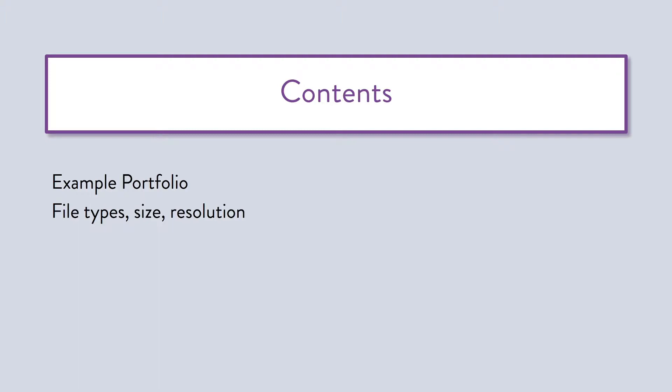Then I will talk about principles such as file type, sizes, resolution, differences between different screens and how your portfolio is actually viewed. I will also talk about some color profiles and which ones you should set up for your drawings to make sure there is consistency and that you choose the right one for the screen. Afterwards I will touch upon some basic design principles such as layouts, grids, fonts, colors, and then take you to InDesign to show you how to set up a basic portfolio template.